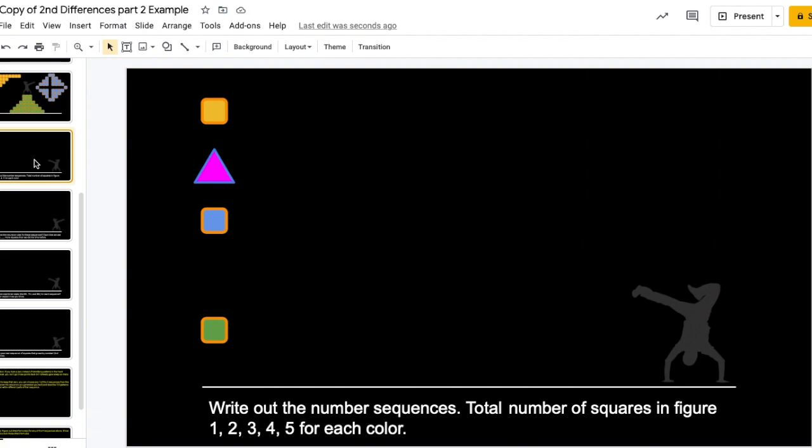We're starting on slide 6. The only slides that you have to have answers on to get full credit are 6, 7, 8, and 9. Alright, slide 6 says write out the number sequence. All you're doing for this is counting.